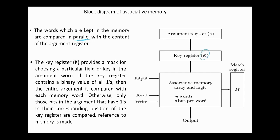The key register provides a mask for choosing a particular field or key in the argument word. If the key register contains all ones, then the entire argument is compared with each memory word. Otherwise, only those bits in the argument that have ones in their corresponding position of the key register are compared.